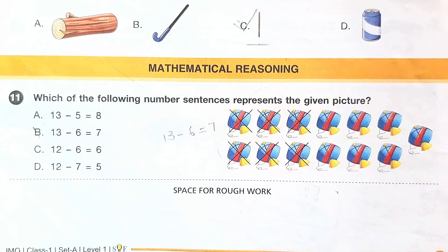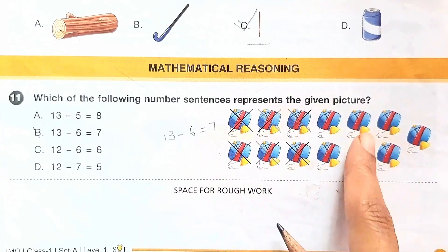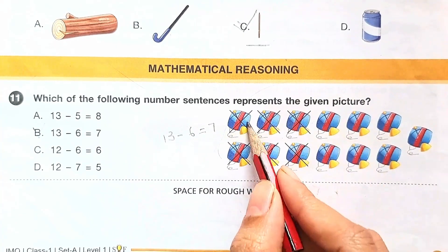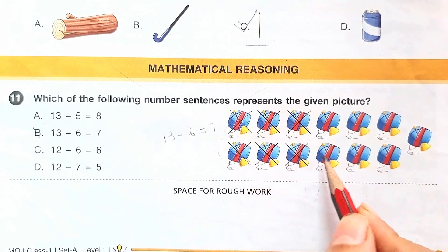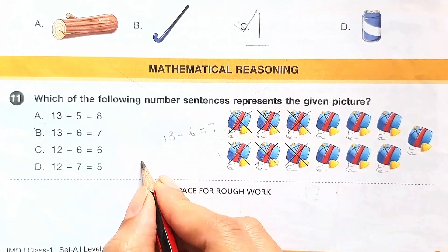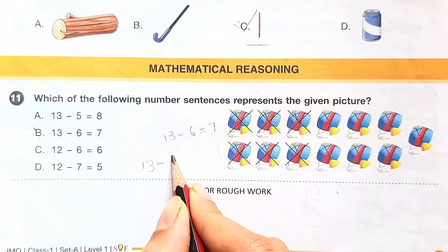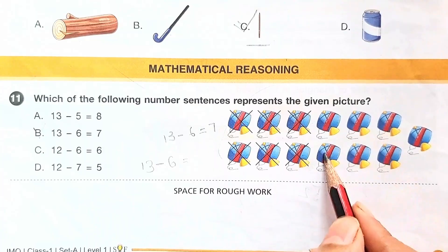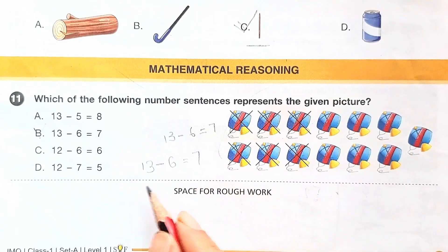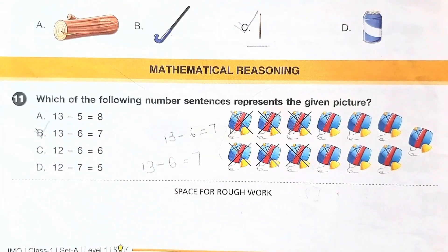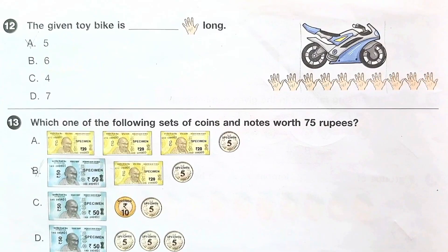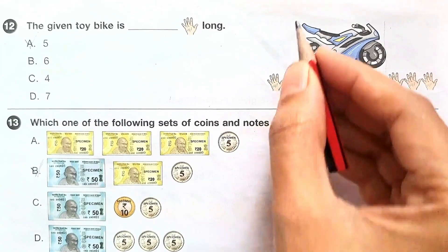Coming to the Mathematical Reasoning section. Question number 11: which of the following number sentences represents the given picture? This is a subtraction. Let us count the total number of items: 1 to 13, so there are 13 total. They have crossed 6, so we subtract 6 and the remaining is 7. The answer is option B: 13 minus 6 equals 7.